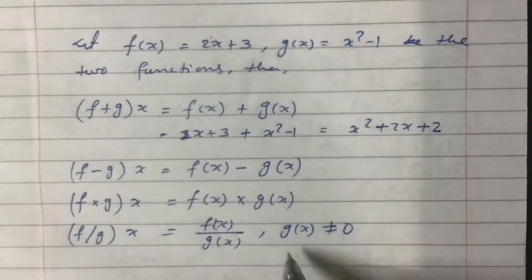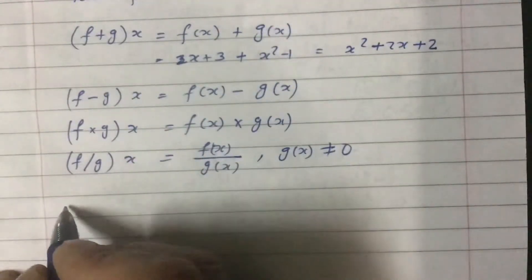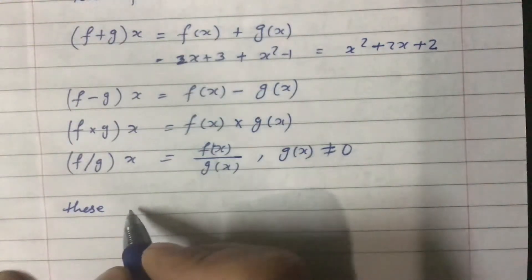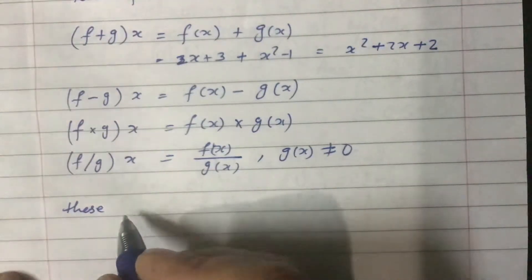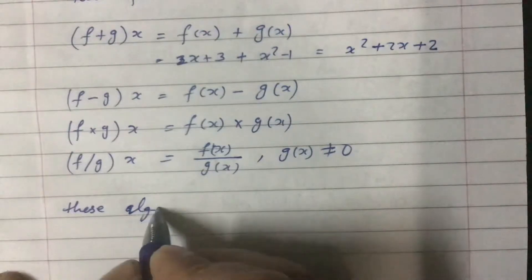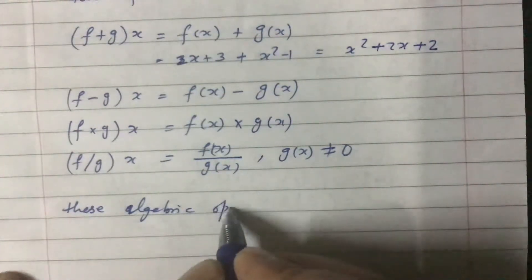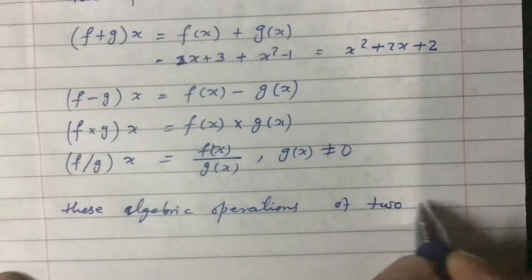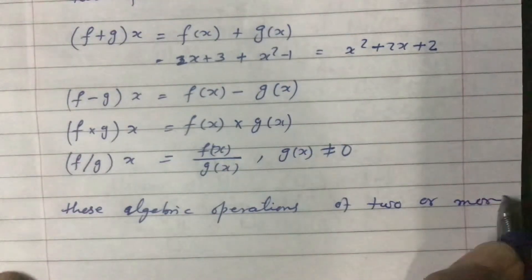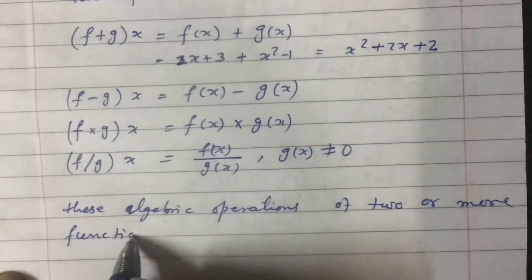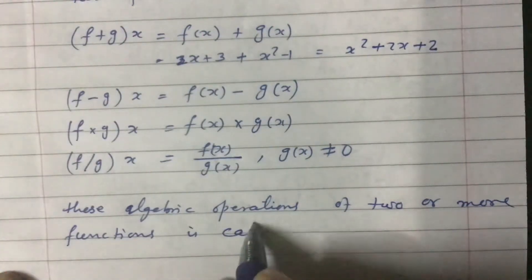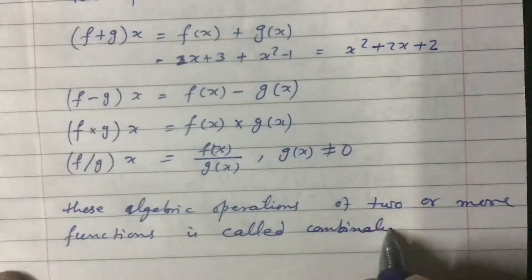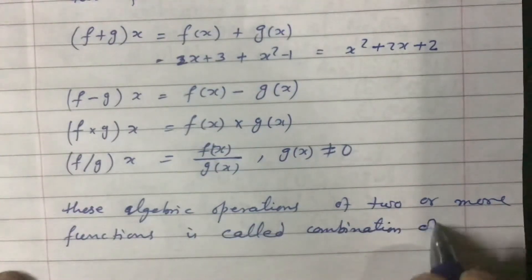Then these f times gx, these algebraic operations of two or more operations is called combination of function.